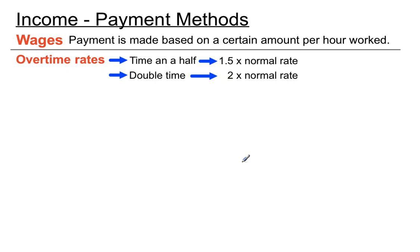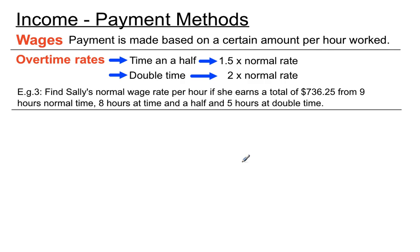Alrighty. So that's wages. Payments made based on a certain amount per hour worked. There's one particularly challenging type of question they can ask and I want to go through it now with you. Find Sally's normal wage. We're kind of working backwards in this one. We're finding her normal wage rate per hour. And the information we've got is she earns a total of $736.25 and this is the breakdown of how she worked. Nine hours normal time, eight hours at time and a half and five hours at double time. Now this is a pretty complex sounding question, so listen carefully as we go through it.